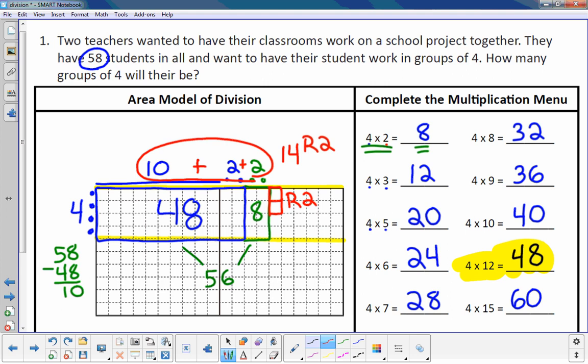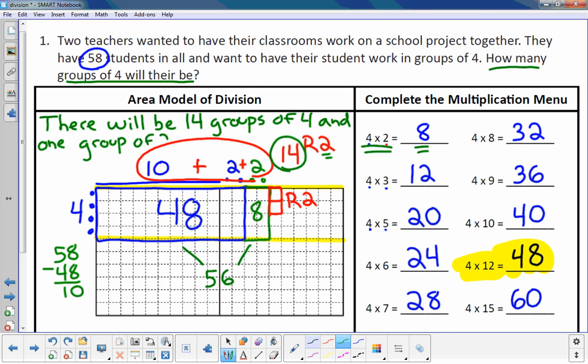But what's the answer to the question up above? It might be different than the answer to the division problem. The question is, how many groups of four will there be? Well, that's right here. There's going to be 14 groups of four. So I'm going to write that here. There will be 14 groups of four and two. See the two? There's going to be one group of two. And one group of two. Let's try another one.